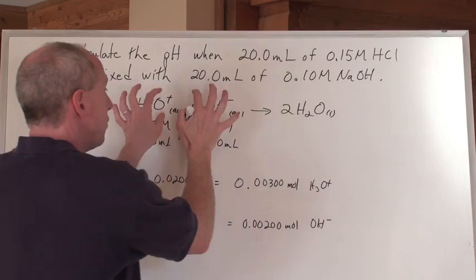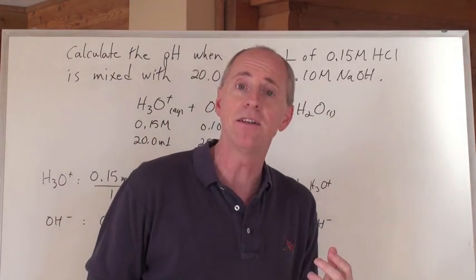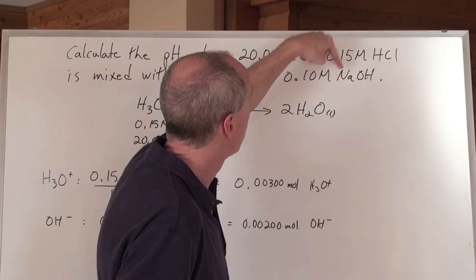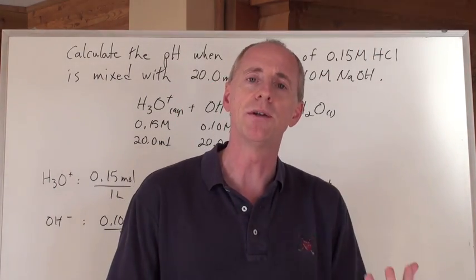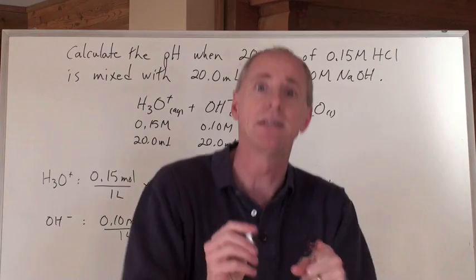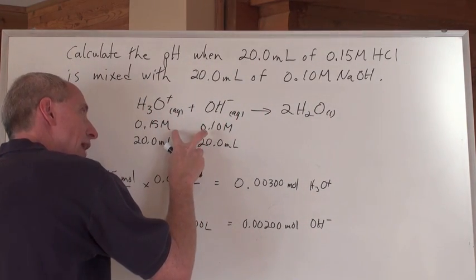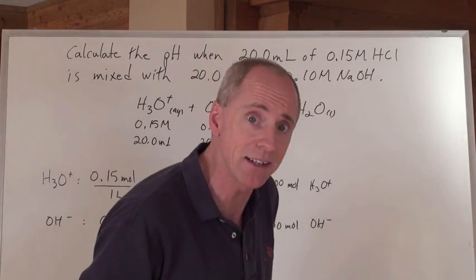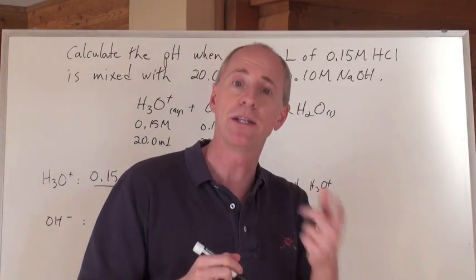If they were the same number of moles of each of those chemicals, you only have water in the end, maybe salt water, NaCl in water. And so you'd have a solution that would have a pH of 7. But if you don't have equal number of moles of these two chemicals reacting and one of them is in excess, then you're going to have to calculate the pH of that solution by doing this.